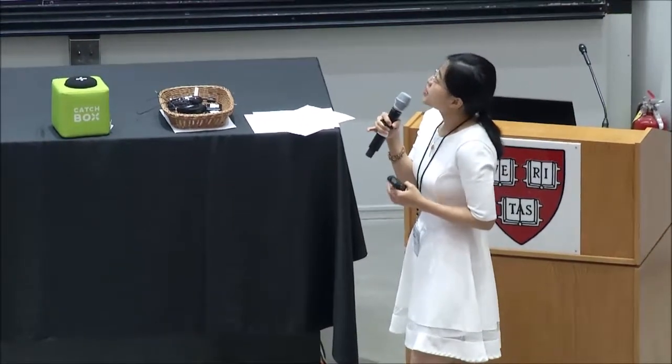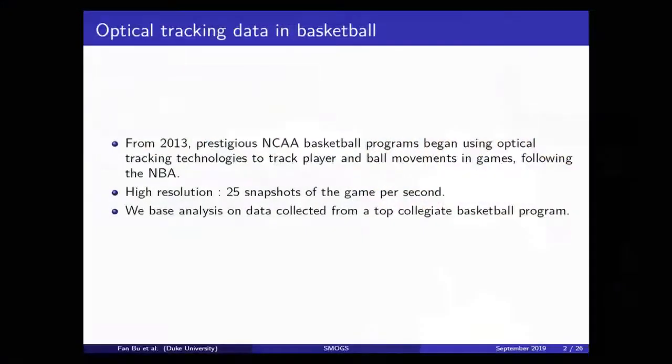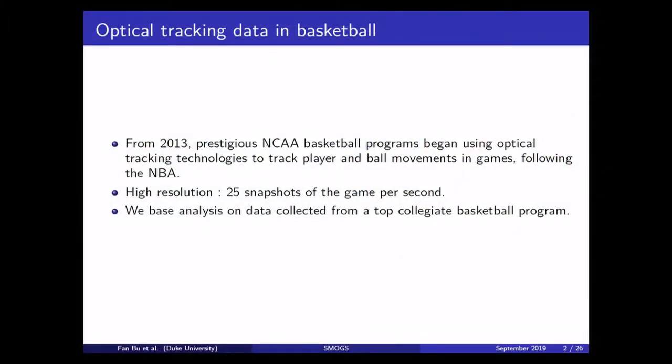So optical tracking data. These kind of data are acquired by cameras installed around a stadium. The system can capture a snapshot of the game 25 times per second, so it's really high resolution. The NBA started using this system at the beginning of the 2013-2014 season, and in the same year some very top collegiate basketball programs started using the system too.